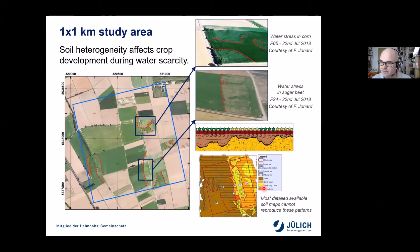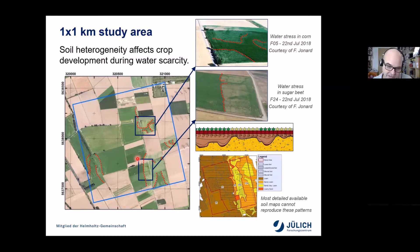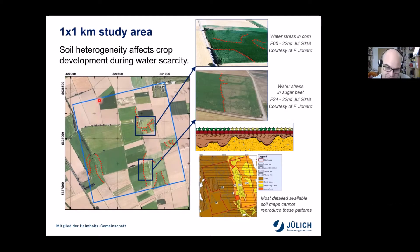We applied this method to a one-square-kilometer study area in the Seelhausen region, one of the focus regions of the Transregional 32 project south of Forschungszentrum Jülich. This area is characterized by heterogeneous soils that affect crop development when water is limited. If you look at aerial photos of the area, you can already see interesting patterns in the sugar beet fields growing here: the green areas indicate plants growing better, and the light green areas in the same field indicate areas where sugar beet is growing less prolifically.